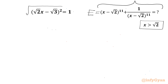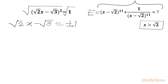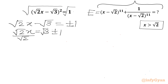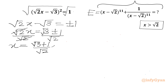Let's take the square root of both sides. So we can write the LHS as: square root 2 times x minus square root 3 equals plus or minus 1. Adding square root 3 to both sides, we get square root 2 times x equal to square root 3 plus or minus 1. Dividing both sides by square root 2, we get two values of x: (root 3 + 1) over root 2, and (root 3 - 1) over root 2.